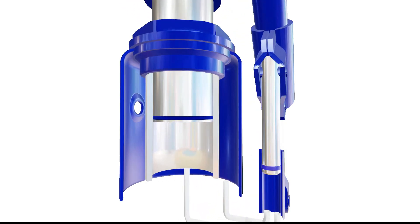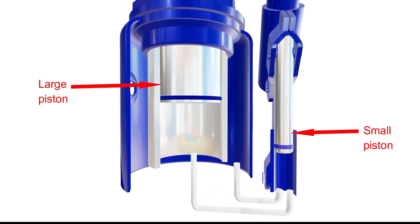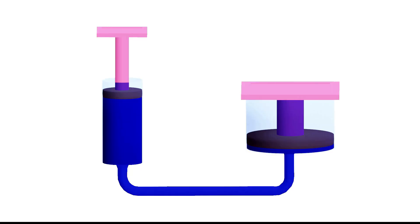The hydraulic jack has a smaller piston, which is connected to a larger piston using a hollow tube. Let's understand how a hydraulic jack uses this setup to multiply the applied force.